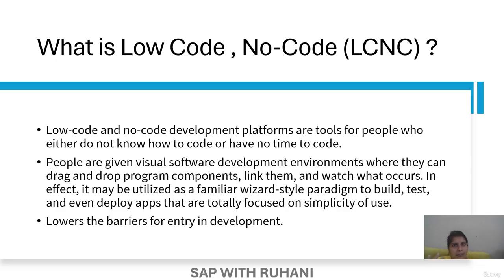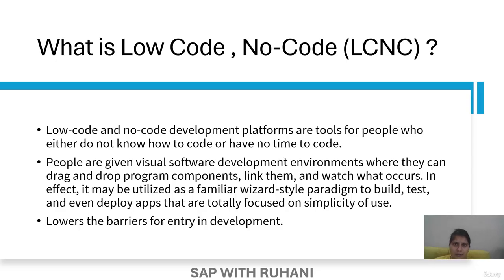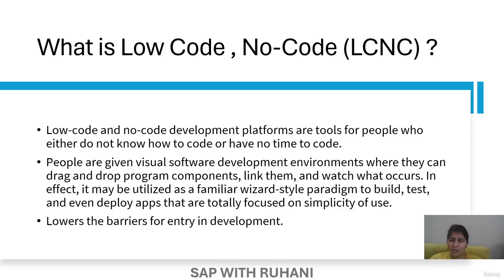Though low-code and no-code platforms may appear similar, there is a thin line between them — even SAP says so. Low-code is a platform where you can build applications with minimalistic coding experience; you write a few particular lines of code and things work. Whereas for no-code, SAP clearly says it is a completely drag-and-drop environment based on visual effects — no coding at all required. We will see that in the SAP Build interface.